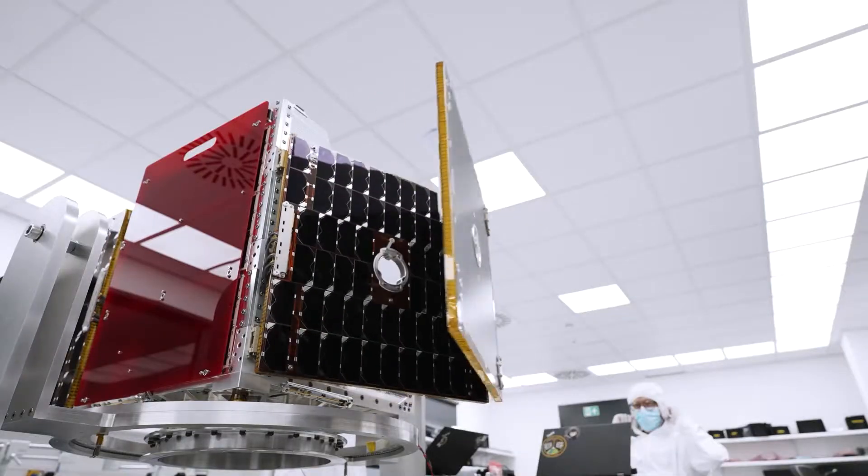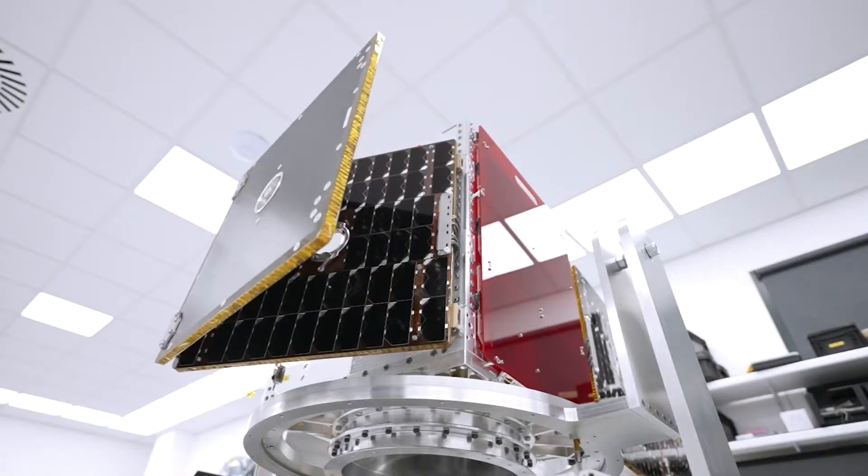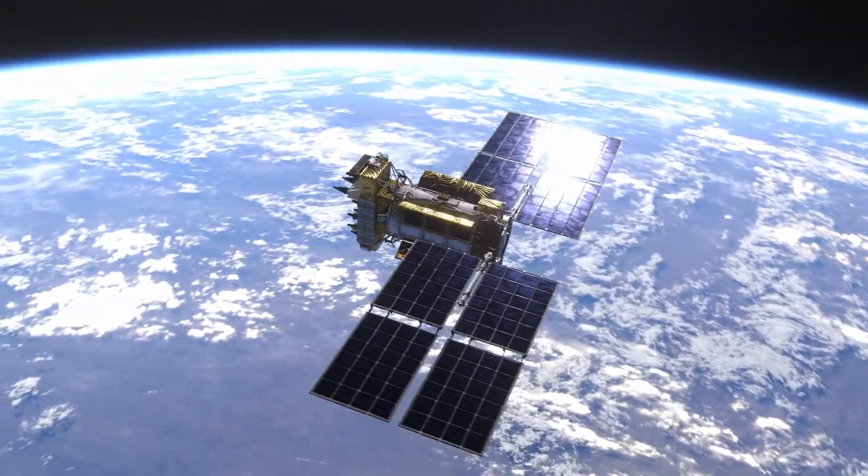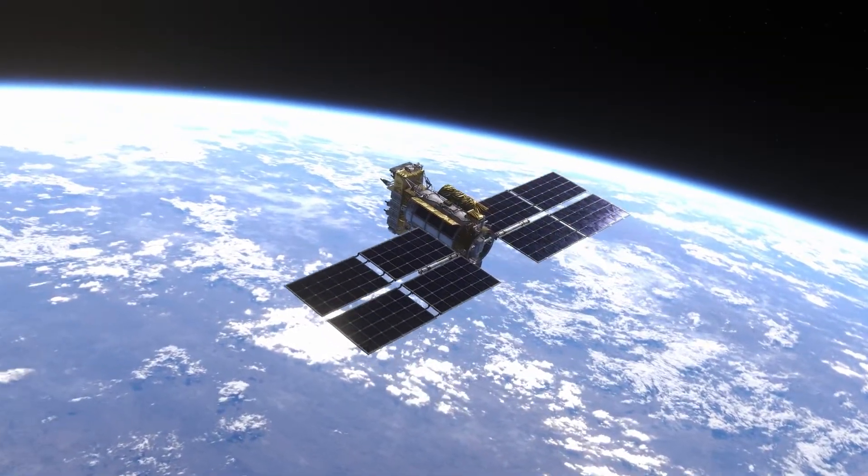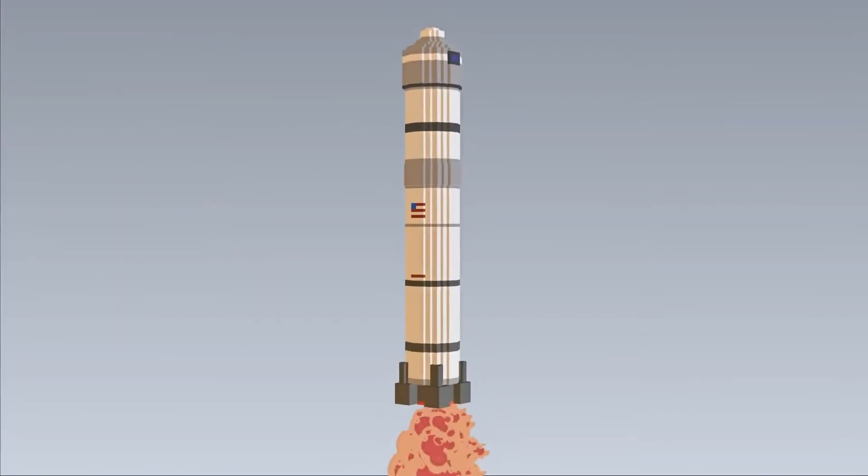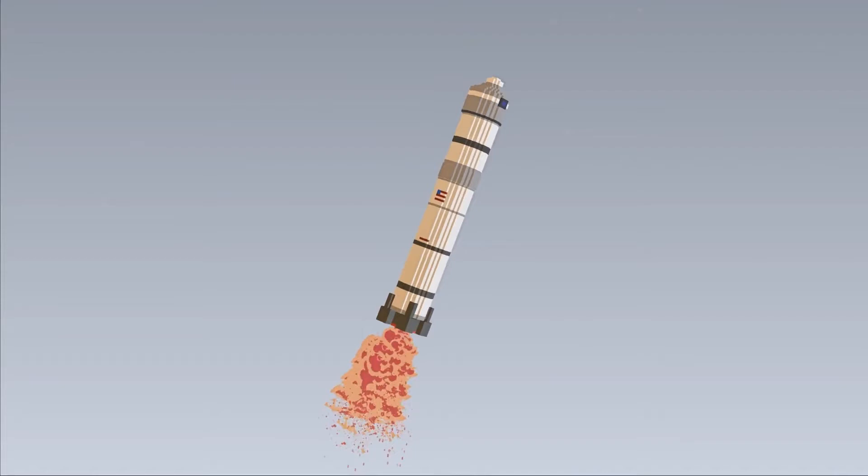Most modern satellites use solar panels to harness energy from the Sun, which is then stored in batteries to keep them running. A minority of satellites have historically relied on nuclear power, and the practice is becoming increasingly rare.